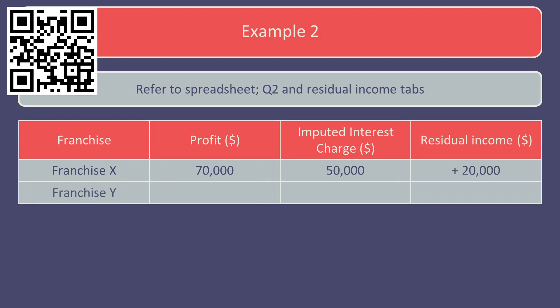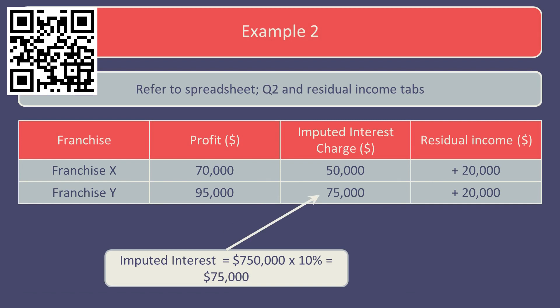For franchise Y, residual income is also £20,000 positive. This is calculated based on the profit of £95,000, less the imputed interest charge of £75,000. The imputed interest charge here is also indicative of the minimum return required by investors of 10% on Y's investment of £750,000.